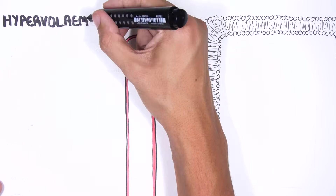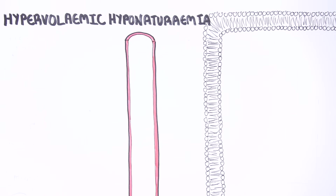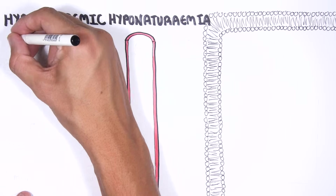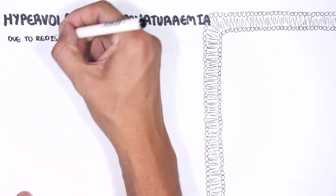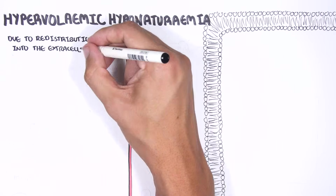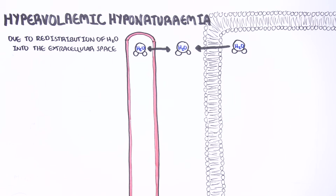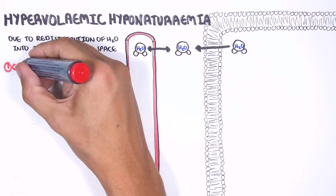Causes of hypervolemic hyponatremia are due to redistribution of water into the extracellular space, particularly the interstitial compartment. The main causes are congestive cardiac failure, liver cirrhosis, and nephrotic syndrome.